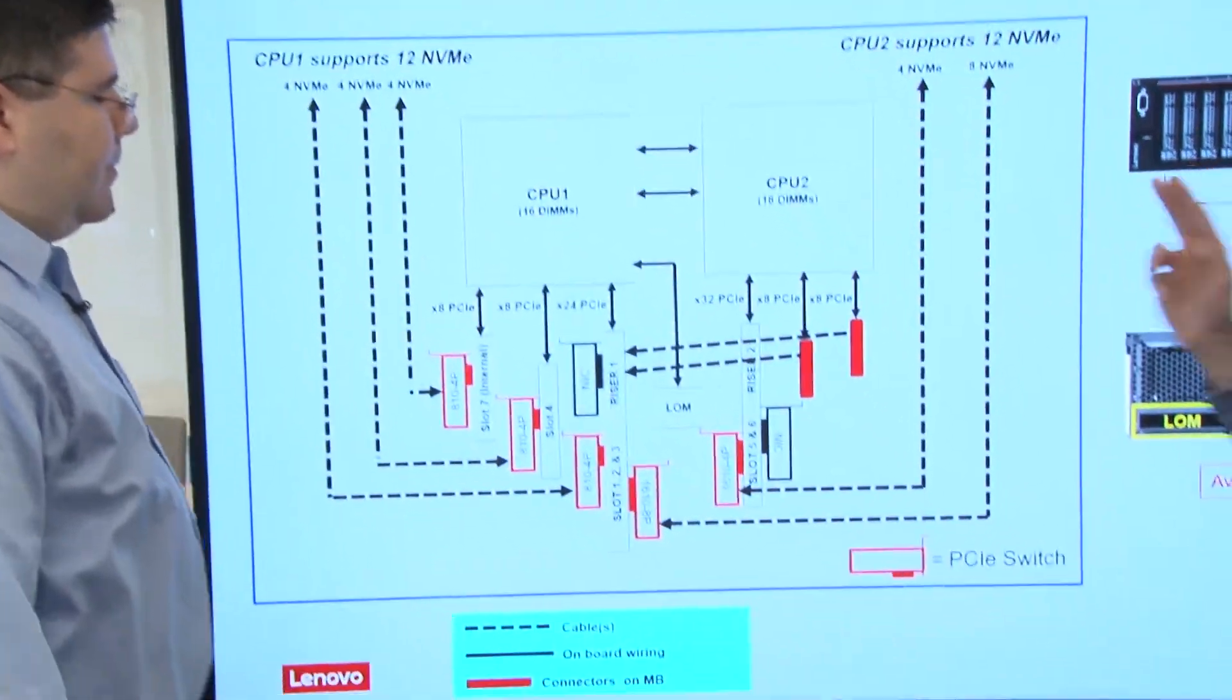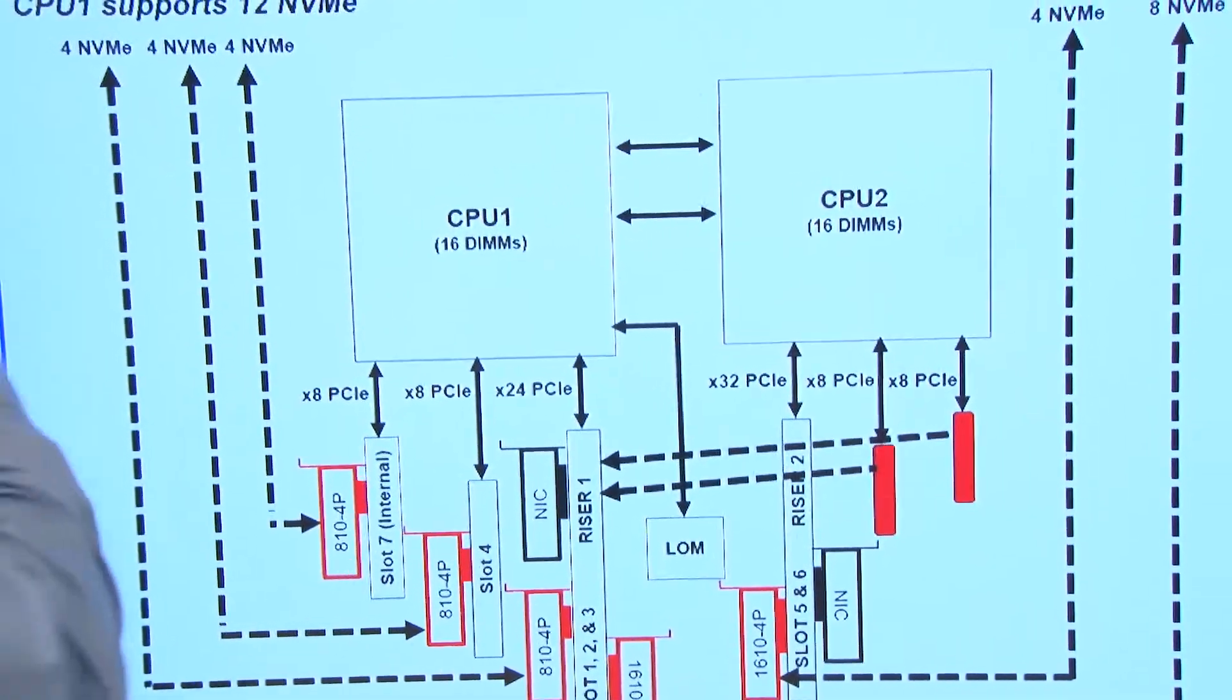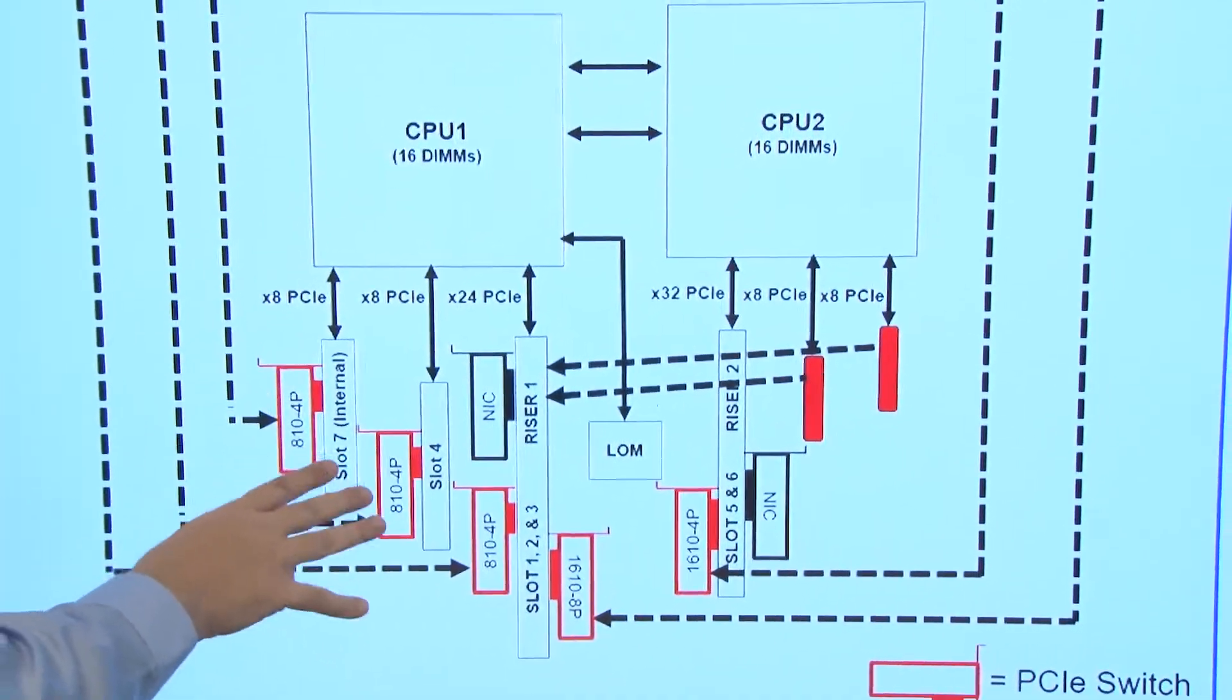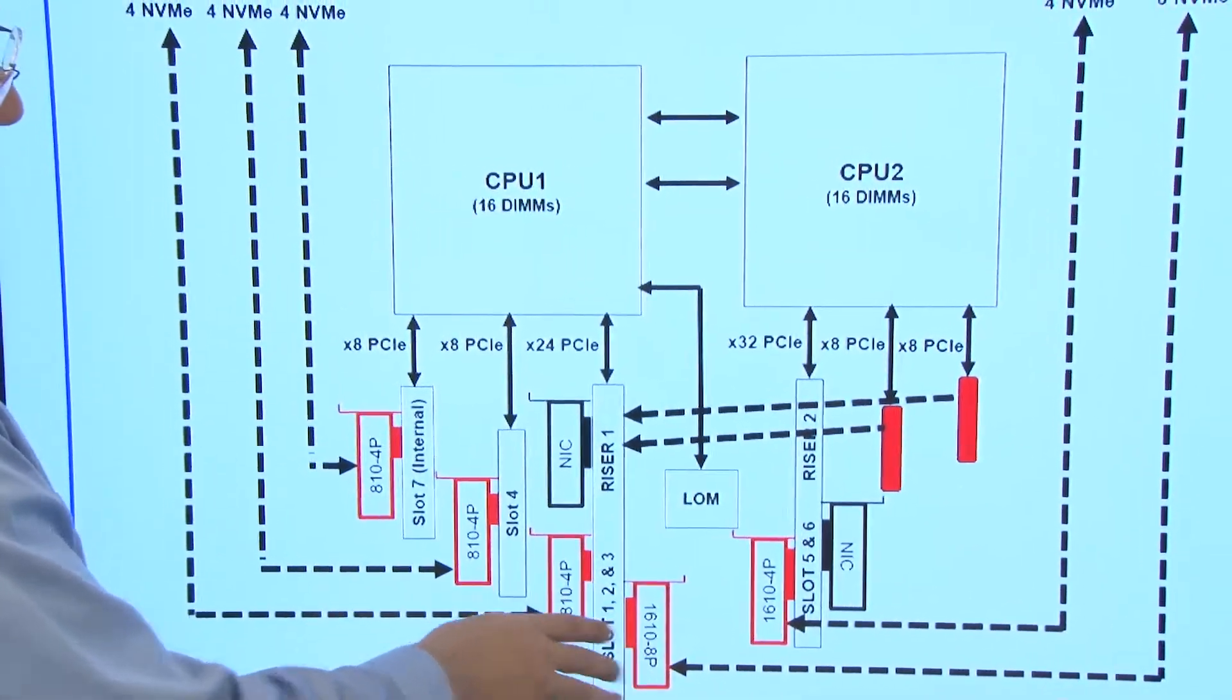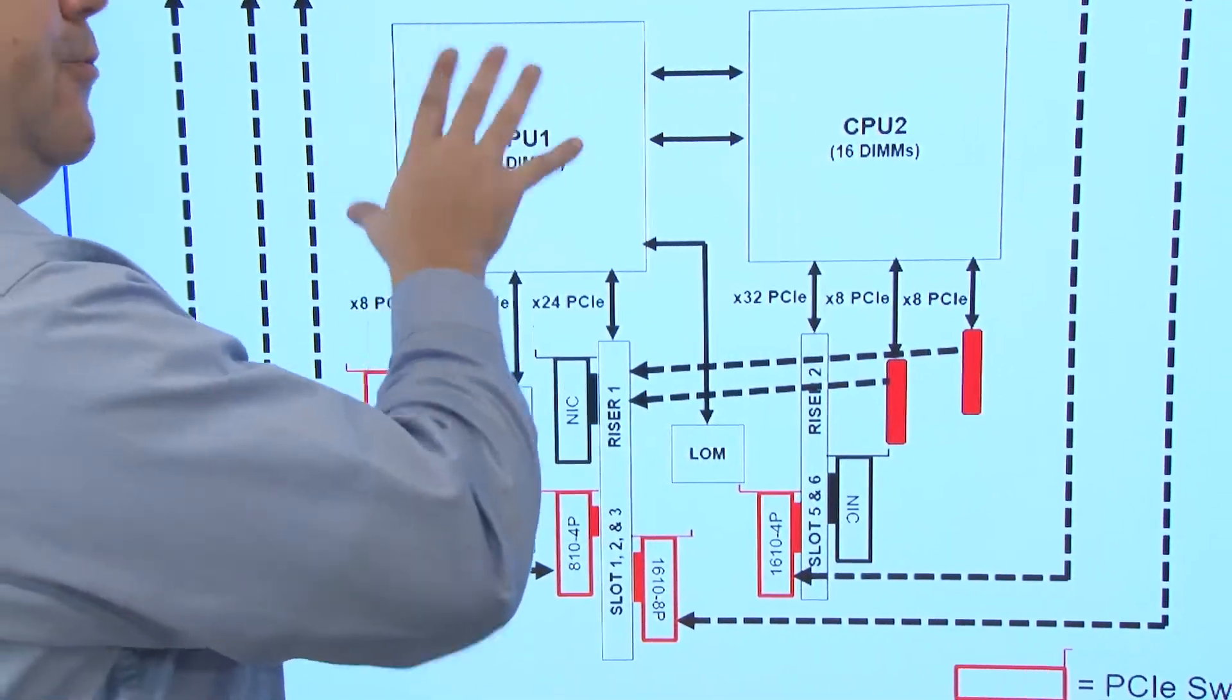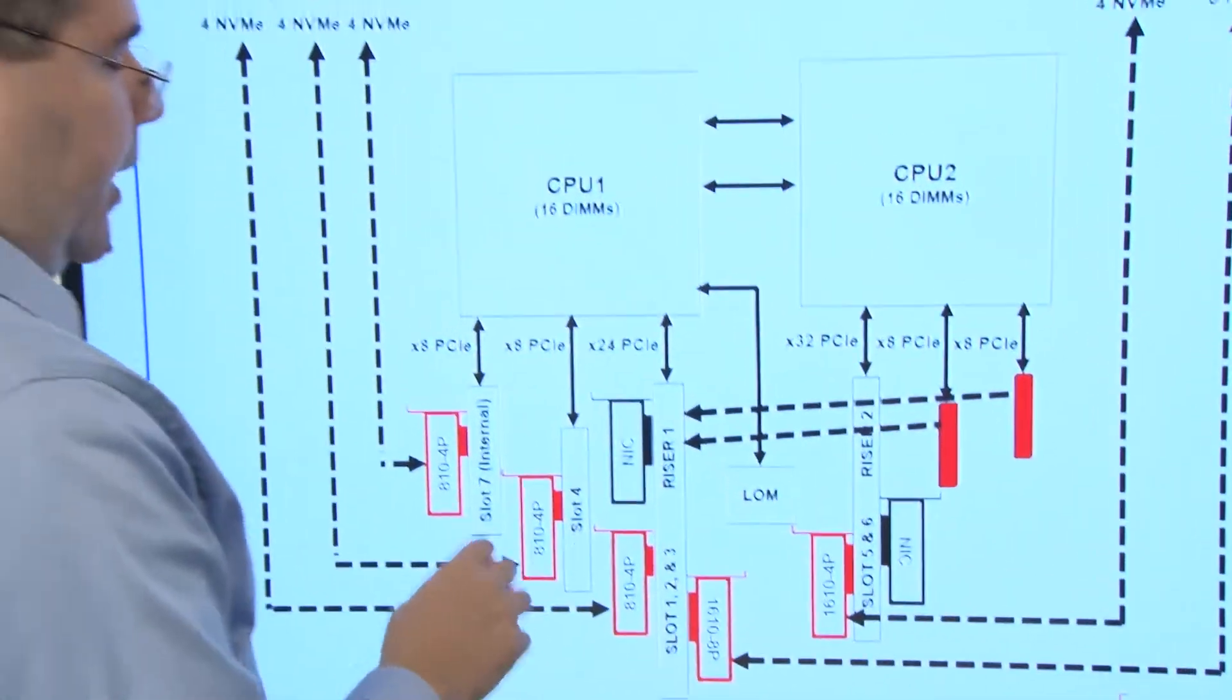So then what's the difference, then, architecturally, on this one compared to the 16? Great question. So what's the first and foremost difference is we now have 12 NVMe drives connected to each one of the CPUs through a slightly different PCI topology. So we've actually developed a new switch, a new PCI switch adapter, the 1610-8P, has been developed uniquely for this configuration.